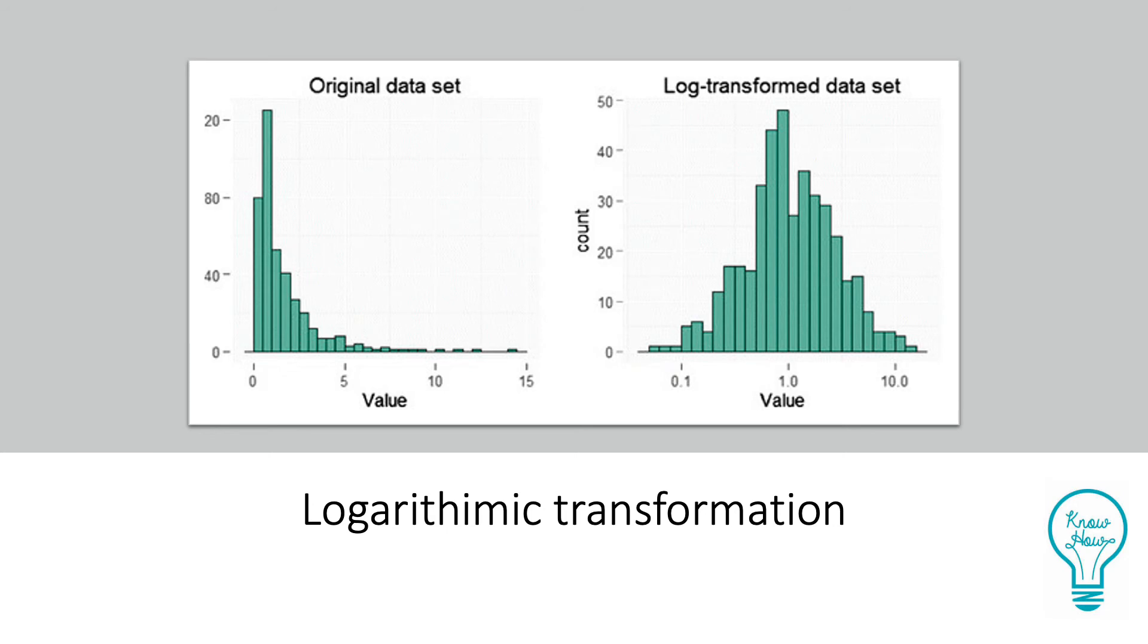So here is the distribution of a dataset before and after performing the logarithmic transformation. As you can see on the left, this data is very highly skewed, however following transformation its mean, median, and mode are centered and its variance is uniformly distributed.